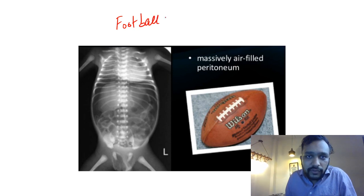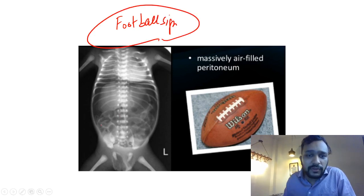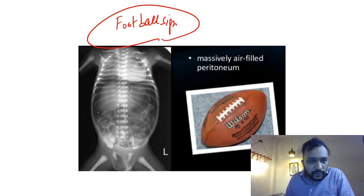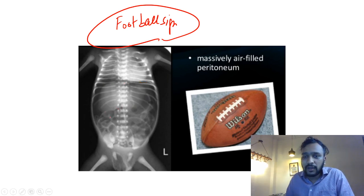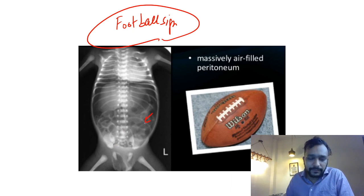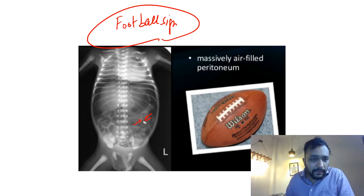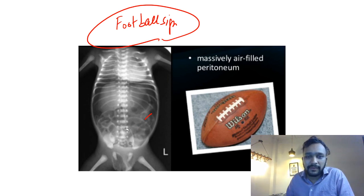In this case, collection of air in the peritoneal cavity gives one sign known as the football sign — excessive distension of the peritoneal cavity. Also, looking at this X-ray, you can see the margins of the liver. Liver margins are usually not appreciated on an abdominal X-ray, but in this case they can be appreciated. This is the liver edge sign. You can also see the bowel wall, which normally cannot be seen on an abdominal X-ray.